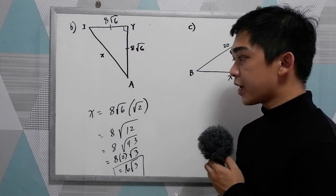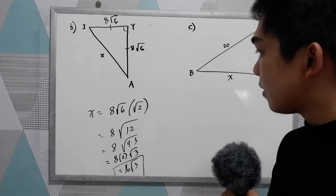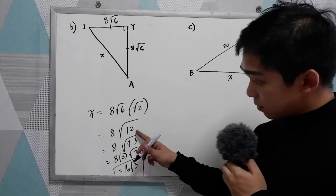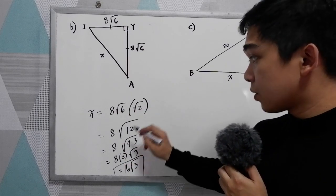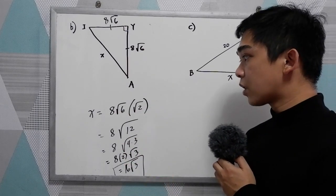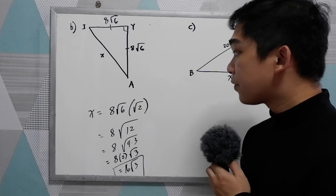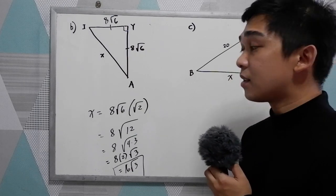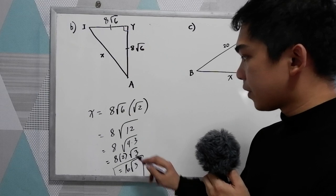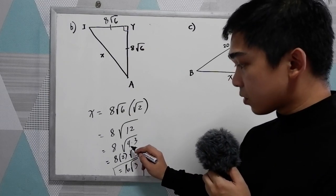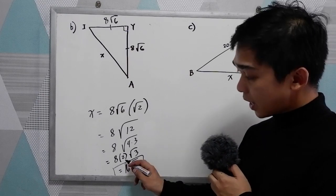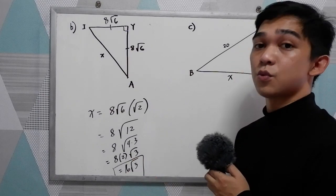This recalls your grade 9 lesson on multiplying radicals. √6 times √2 equals √12, since we can multiply radicals with the same indices. Then 12 equals 4×3, and 4 is a perfect square. √4 equals 2, and 8×2 equals 16, giving us 16√3.